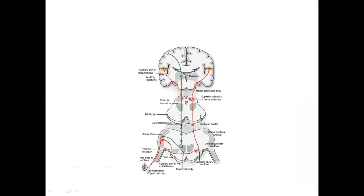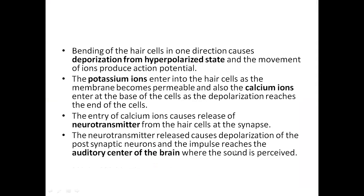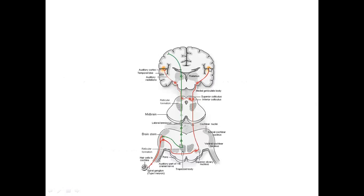Once received by the vestibulocochlear nerve, the signal reaches the auditory center of the brain where interpretation of sound takes place. Before the bending of the cilia of the hair cells, the hair cells are in a hyperpolarized state. The entry of potassium ions into the hair cells results in depolarization and generation of an action potential. This also results in entry of calcium ions at the base of the hair cells, and calcium ion entry triggers release of neurotransmitters essential to transmit information to other neurons through the auditory nerve. Finally, this neurotransmitter causes depolarization of postsynaptic neurons, and the impulse reaches the auditory center of the brain where the sound is interpreted.